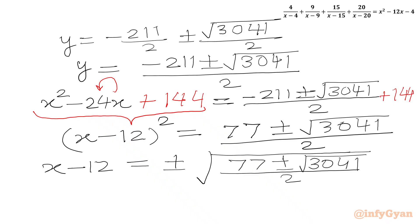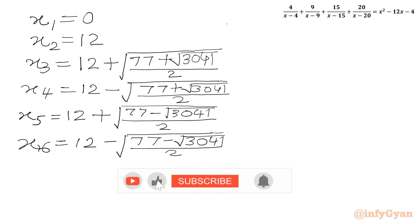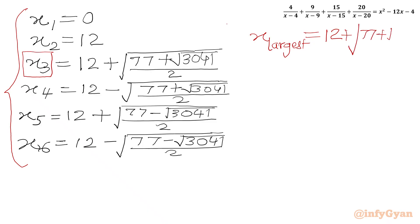Now we just add 12 to both sides to get our remaining 4 roots: X equals 12 ± √[(77 ± √3041) / 2]. So we have in total 6 solutions. Out of these 6 solutions we have to pick the largest X value, which is X₃. The final answer — X largest — equals 12 + √[(77 + √3041) / 2].